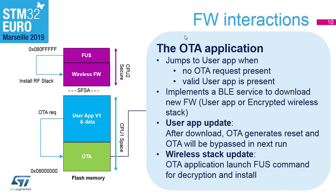An OTA request is the way for the user application to call the OTA. It is done very simply: the OTA request is a word placed at the first memory address of SRAM. Then a system reset is generated. After reset, the OTA boots and checks this command because SRAM retains its value between resets, and proceeds accordingly.